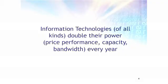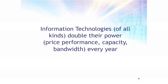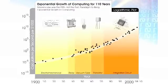It doesn't just apply to computation — it's really any technology where we can measure the underlying information properties. Here we have 49 famous computers put on a logarithmic graph. The logarithmic scale hides the scale of the increase, because this represents a trillions-fold increase since the 1890 census. In the 1950s, there were shrinking vacuum tubes, making them smaller and smaller — that finally hit a wall. They couldn't shrink the vacuum tube anymore and keep the vacuum, and that was the end of the shrinking of vacuum tubes. But it was not the end of the exponential growth of computing.